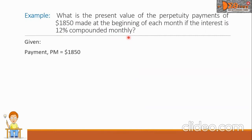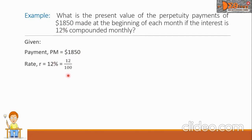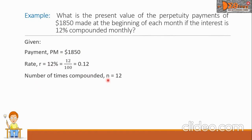Let us write the given of the problem, starting with the payment: PM equals $1,850. Next is the rate, denoted by R, equal to 12%. Let us convert this percent into decimal by dropping the percent sign and dividing 12 by 100, giving us 0.12. Next is the number of times compounded — that is N — and it says monthly, so N equals 12.